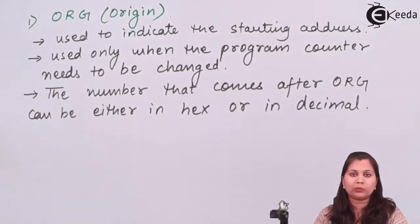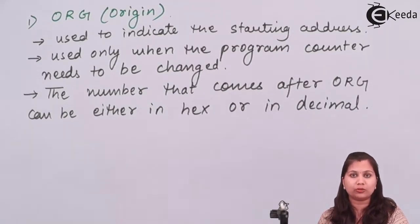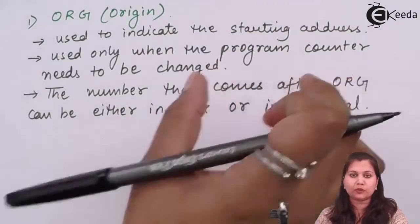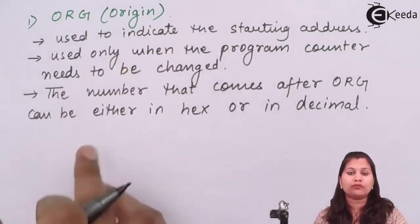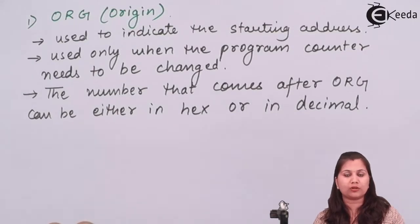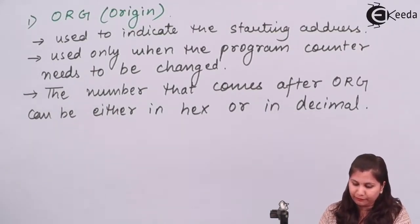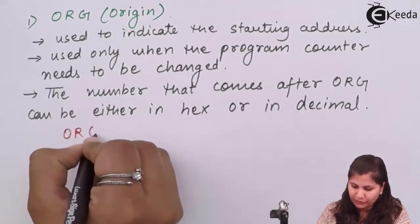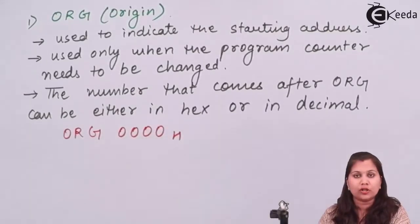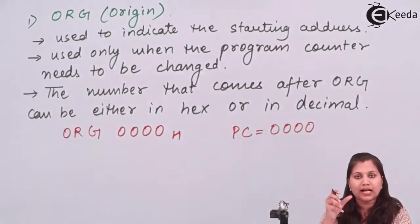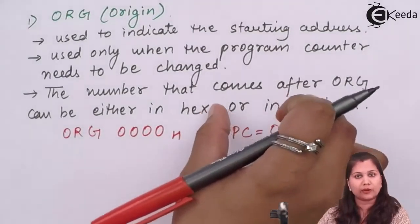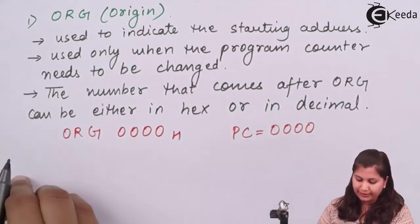The ORG directive is used only when the program counter needs to be changed. The program counter always holds the address of the memory location where the next instruction to be executed is written. When you want to change the contents of the program counter, you use ORG. For example, if we write ORG 0000H, we are initializing the program counter with 0000, so it will start executing instructions from that memory location.